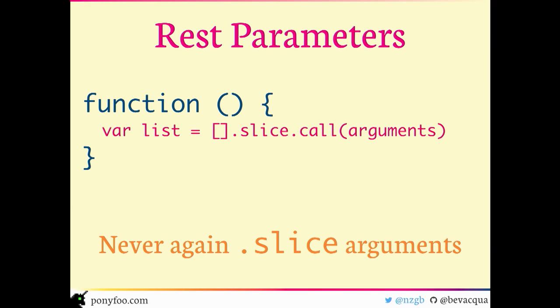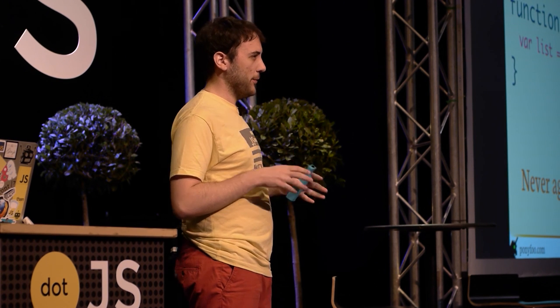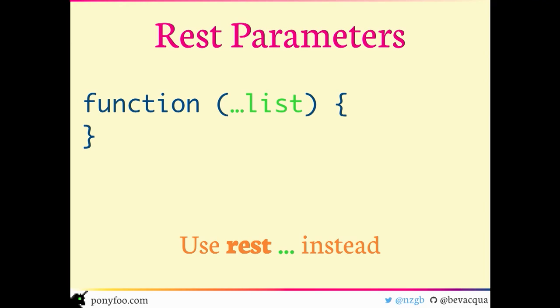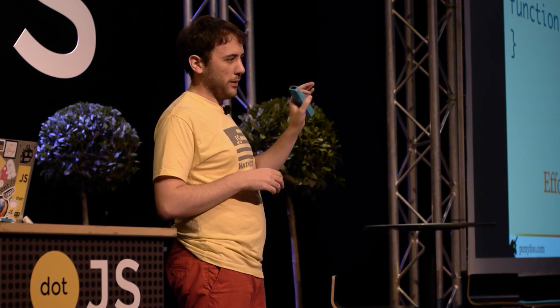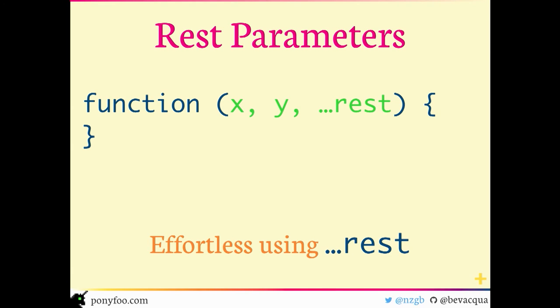Rest parameters are one of those features that simplify your code so you don't have to worry so much on the 'how' and you focus more on what you actually want to do. In ES5 there's a lot of complexity when dealing with dynamic arguments. The rest parameter operator lets you just do '...list' or similar in the parameter list, so it's more clear and all your arguments will be in that variable. You can also declare a few named parameters first, and then in the last position — only the last position — use the rest parameter for remaining arguments. Another key difference is that the rest parameter is an actual array and you don't have to cast it.